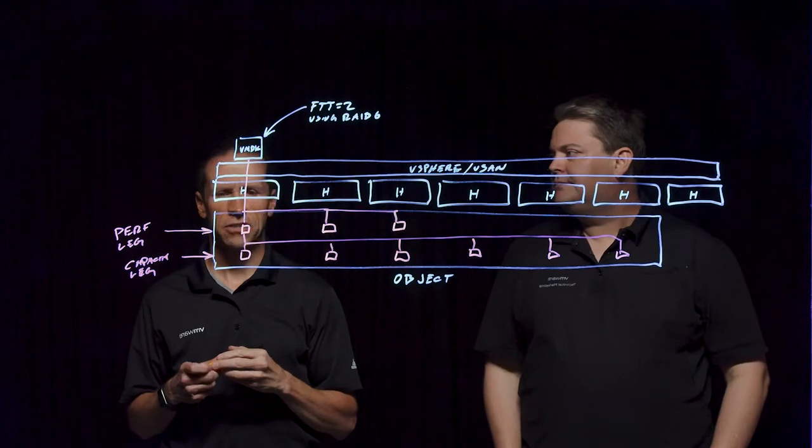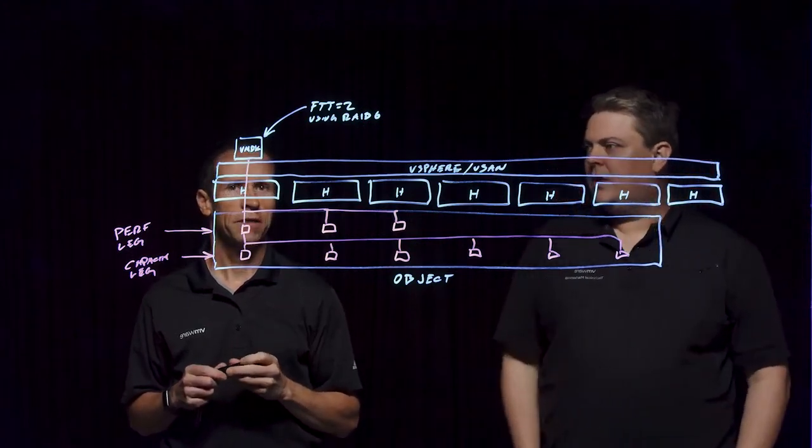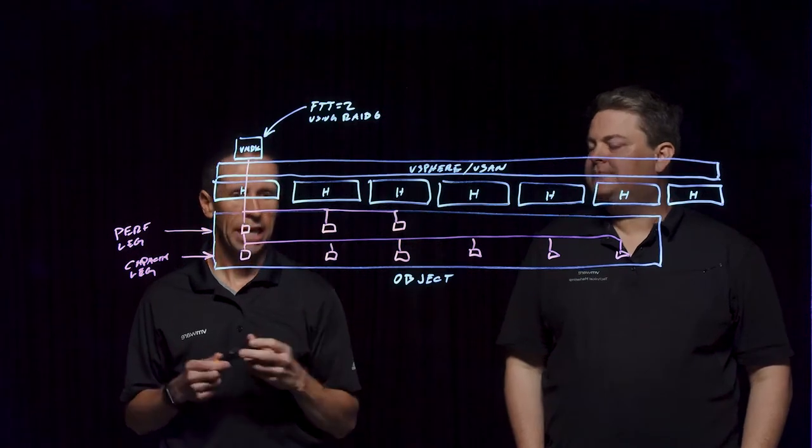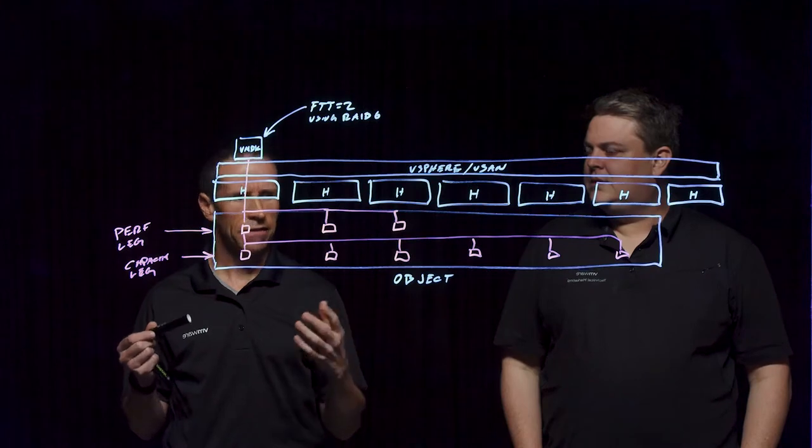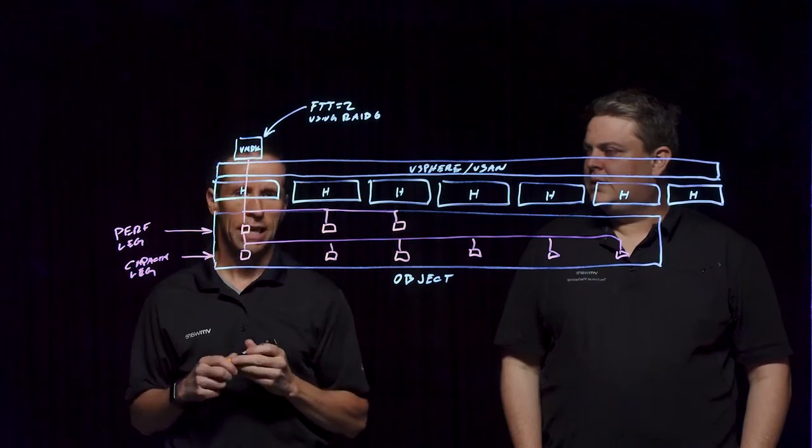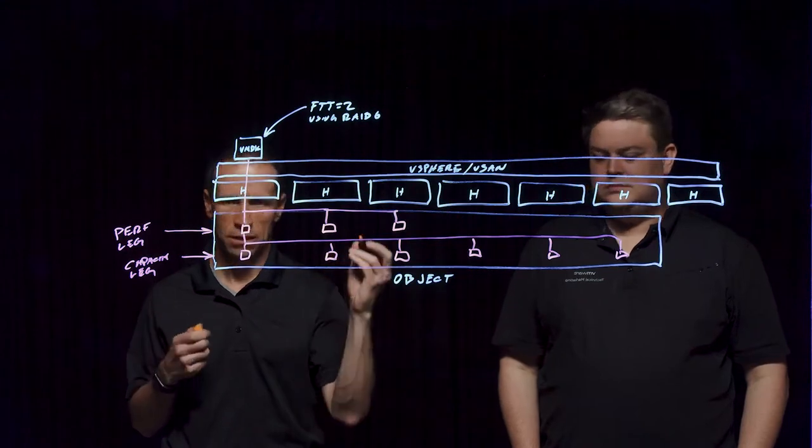One may look at this initially and think, wait a minute, if I'm making a write from a VM or VMDK and it's landing with this sort of data structure, doesn't that look like there's going to be a lot of writes occurring? And the answer is no, once we understand how this works a little better.